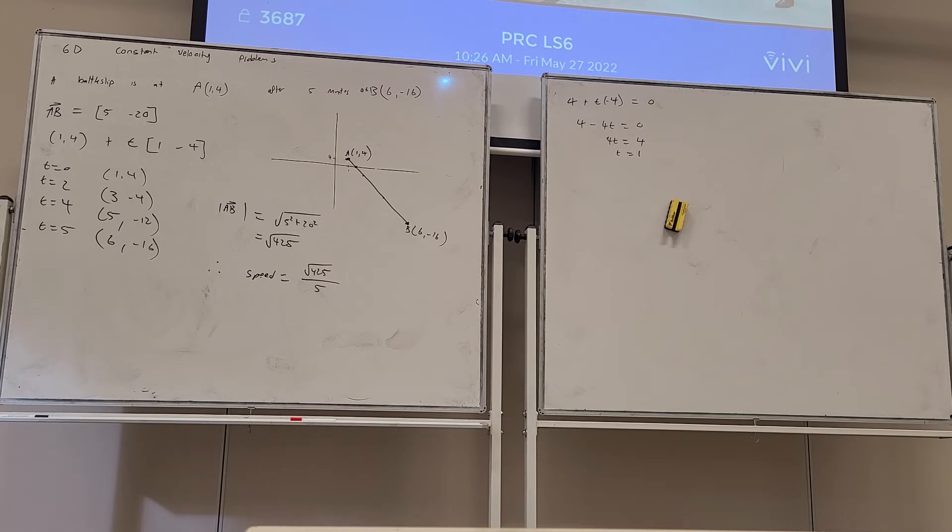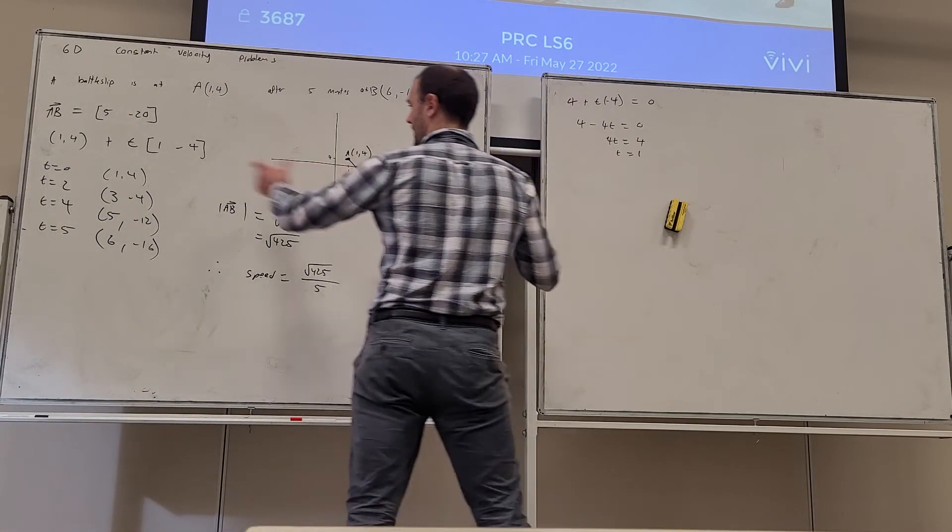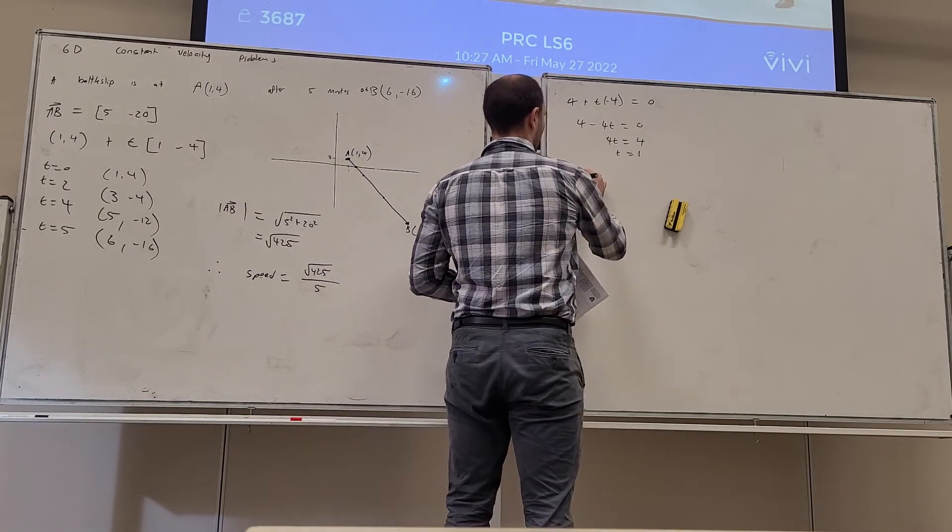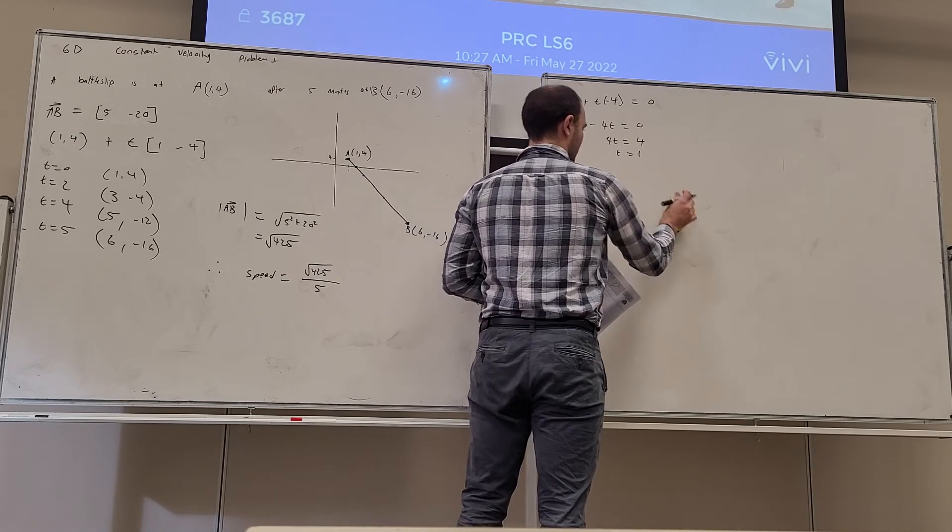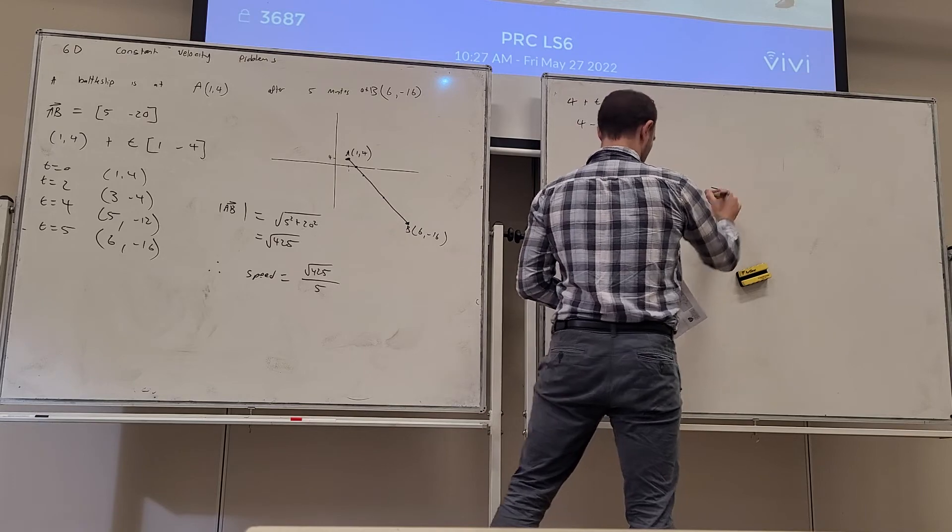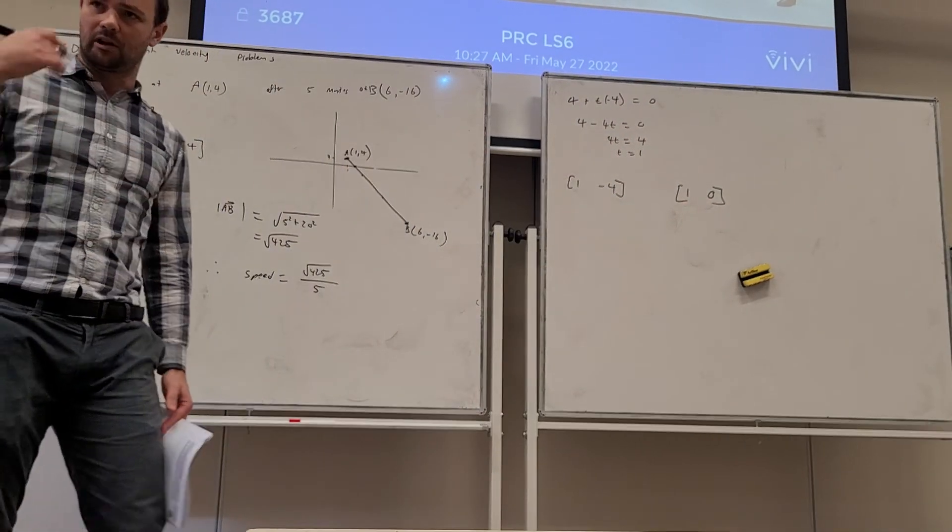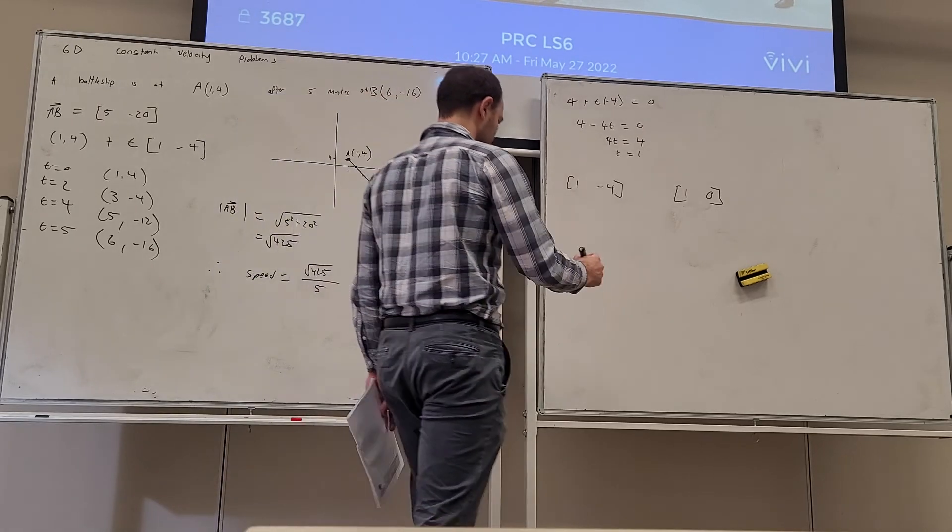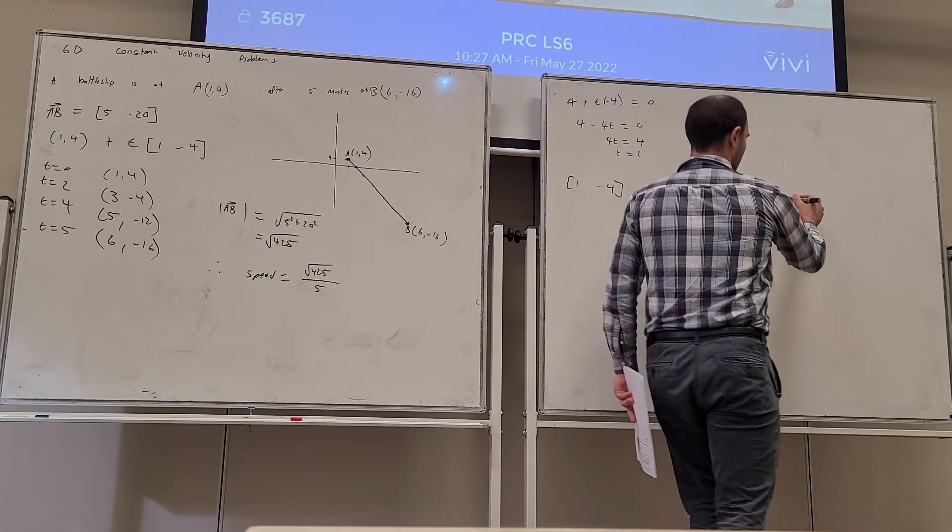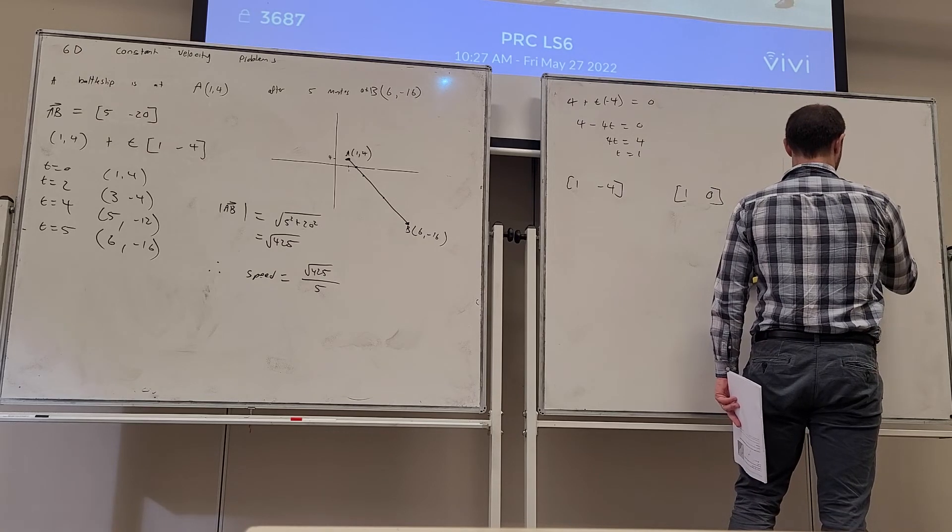Determine the angle the battleship makes with the x-axis. So this is a recap of what we did yesterday. If we think about the direction of the battleship, this is it here: 1 and minus 4. And if we think about the direction of the x-axis it's going to be 1 and 0. So we have two vectors. If we want to find an angle between them we're going to use the vector angle formula. So let's write that up.